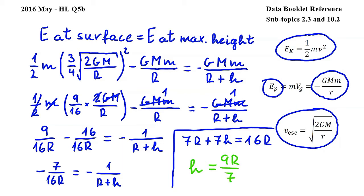Subtracting 7R and dividing by 7 gives us H equals 9R over 7. So the maximum height reached by the probe is equal to 9R over 7. I think now we all deserve a nice sugar-free ice cream after all of this work.